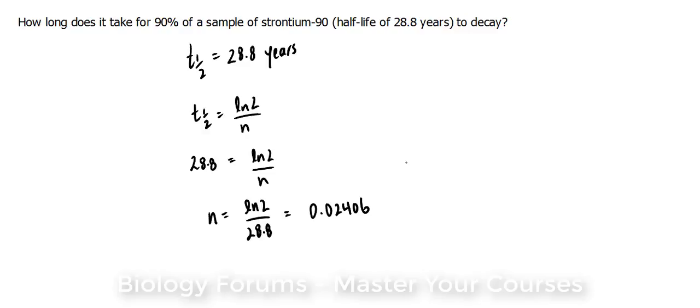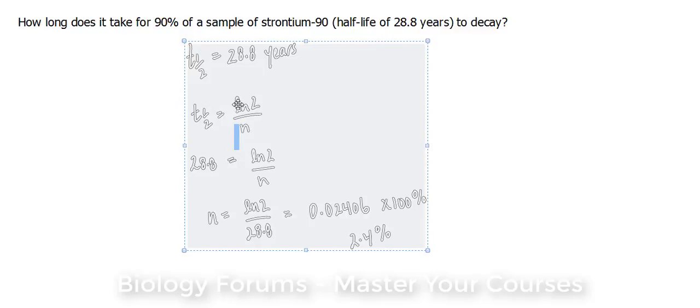Now, what that means is that's our rate. Technically, if we multiply this by 100%, it's around 2.4% per year. Now, this doesn't solve our problem.